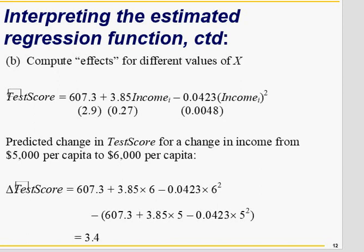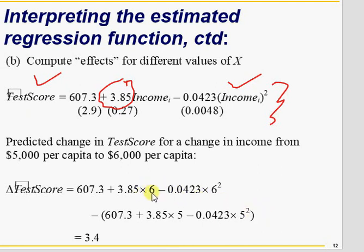Let's move to how to interpret the quadratic model — that's very important. You have income squared in the model, and this term makes a difference in interpretation. Previously, if income goes from five to six, or twenty-five to twenty-six, or thirty-five to thirty-six, the change in test score was only 3.85. But now the squared term makes all the difference, because six squared minus five squared is different from twenty-six squared minus twenty-five squared, even though the change in income is one thousand dollars in both cases.